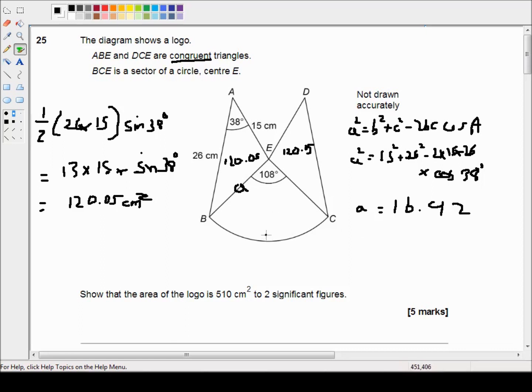Okay, so now the area of the semicircle, or not semicircle but the arc, is equal to 108 degrees, which is 108/360ths of a circle, times pi times r, which is 16.92 squared.